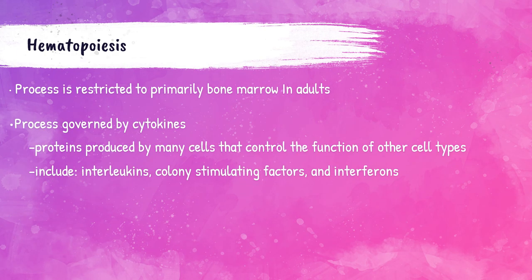Six months after fertilization, still in utero, the bone marrow becomes the primary site of hematopoiesis and remains that way. There are other hematopoietic tissues in adults other than the bone marrow — other sites that can perform hematopoiesis — however, the main site is the bone marrow.